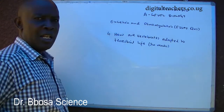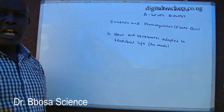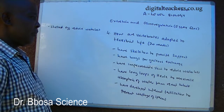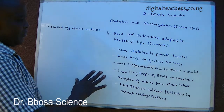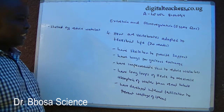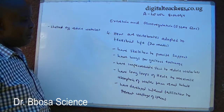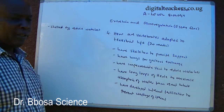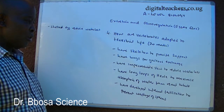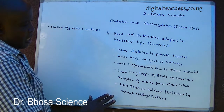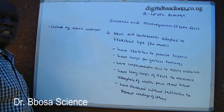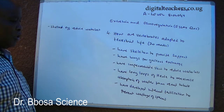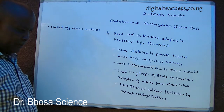Number 5: How are reptiles adapted to terrestrial life? (20 marks.) They have a skeleton to provide support; lungs for gaseous exchange; impermeable skin to reduce water loss; long loops of Henle to maximize absorption of water from the renal tubules; internal fertilization to prevent wastage of sperm; and shelled eggs to reduce water loss.